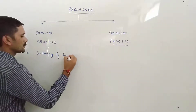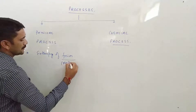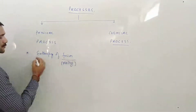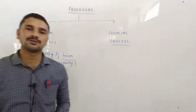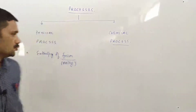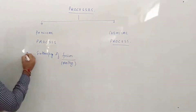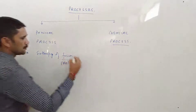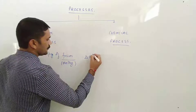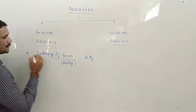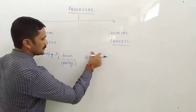Fusion ka matlab kya hota hai bacchon? Fusion ka matlab hota hai melting. Melting ka doosra naam kya hai? Fusion. To agar kisi process ke andar tumhe melting dikhai de rahi hai to wahan par enthalpy change hoga — jo bhi heat absorb hogi ya phir release hogi, that is called enthalpy of fusion. Isko represent karte hain delta H_F se, aur agar ye standard enthalpy hai to iske upar naught laga dete hain. Naught tab lagana hai jab standard enthalpy ki baat ho.